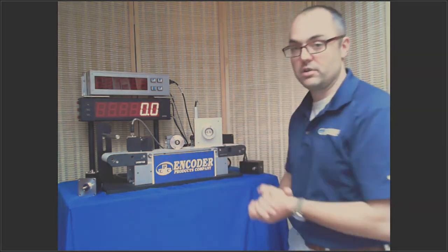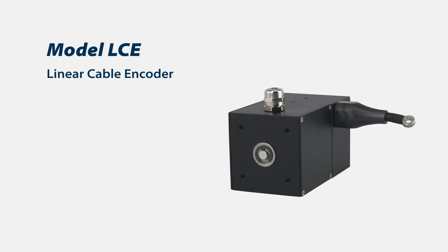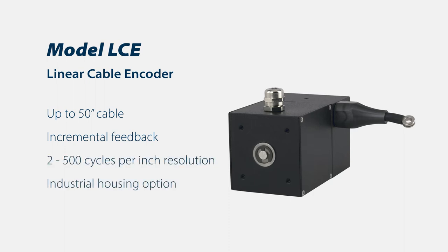We have two main models of draw wire encoders. Our tried and true model is our LCE. That is a 50 inch maximum draw with a stainless steel cable and a five inch drum. This encoder is only offered right now in the catalog with incremental feedback and you can get up to two thousandths of resolution per inch.